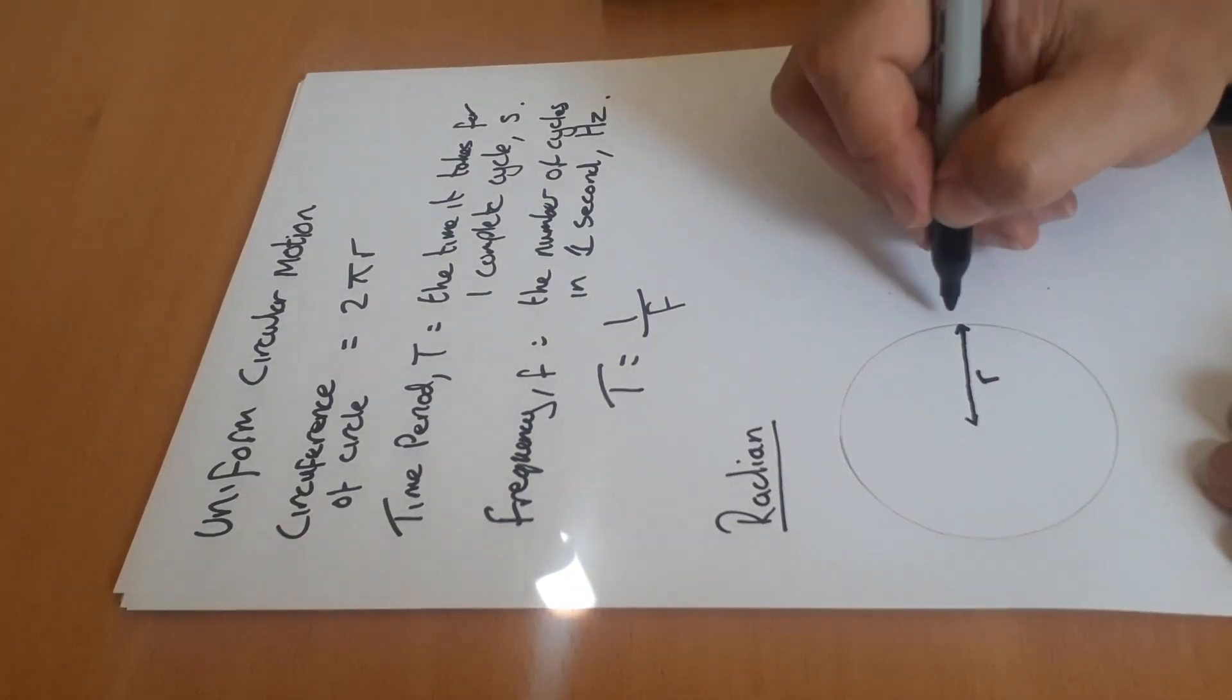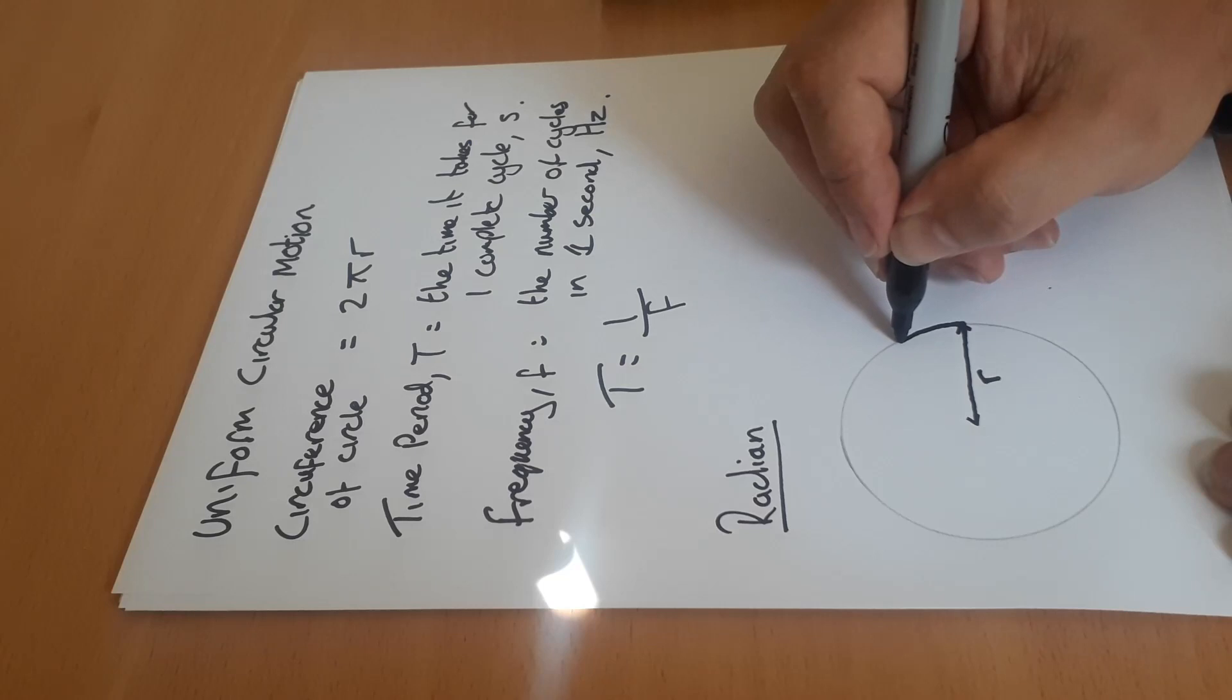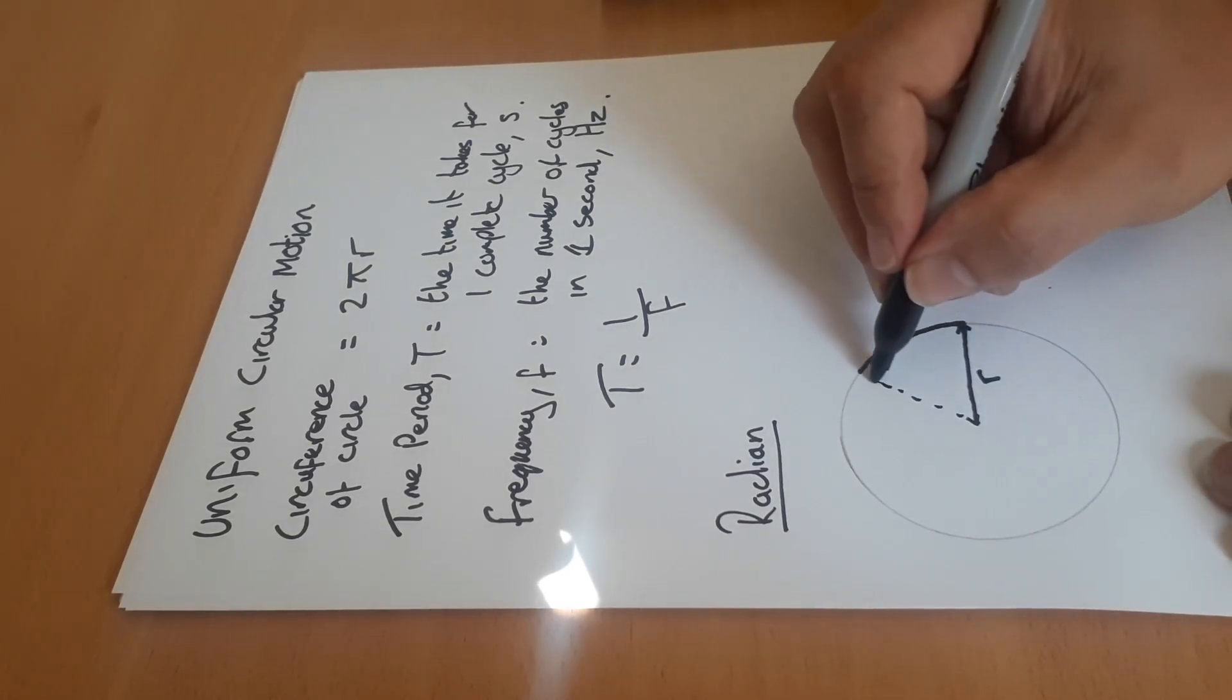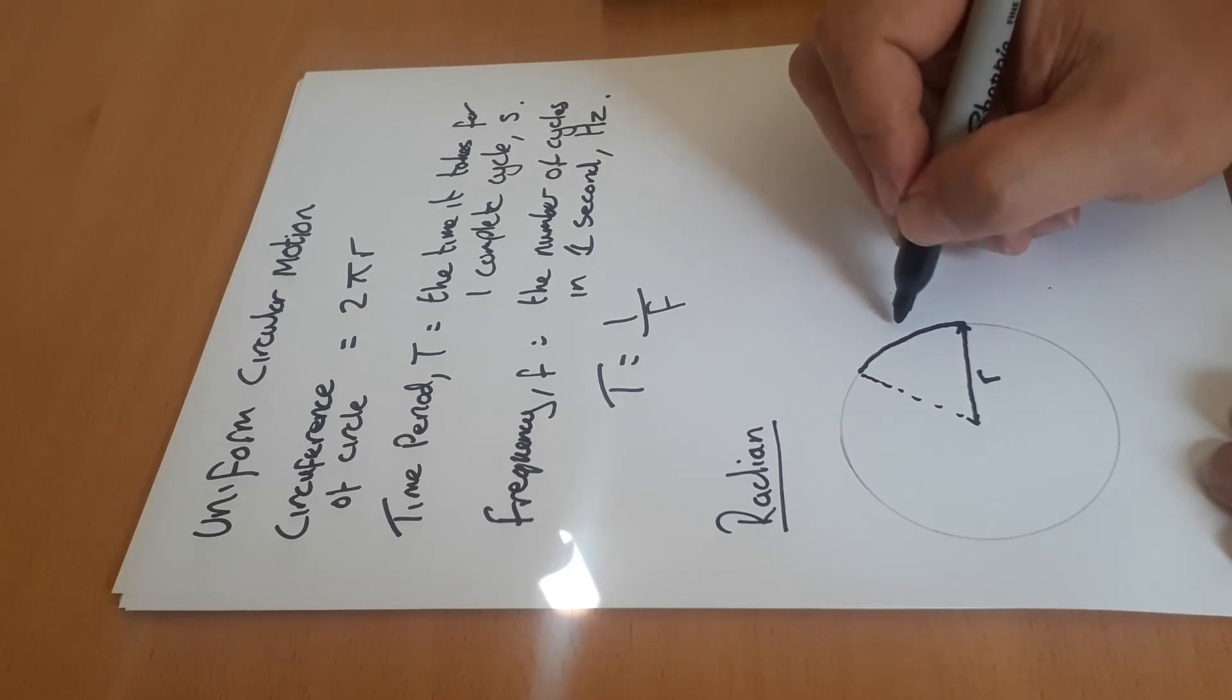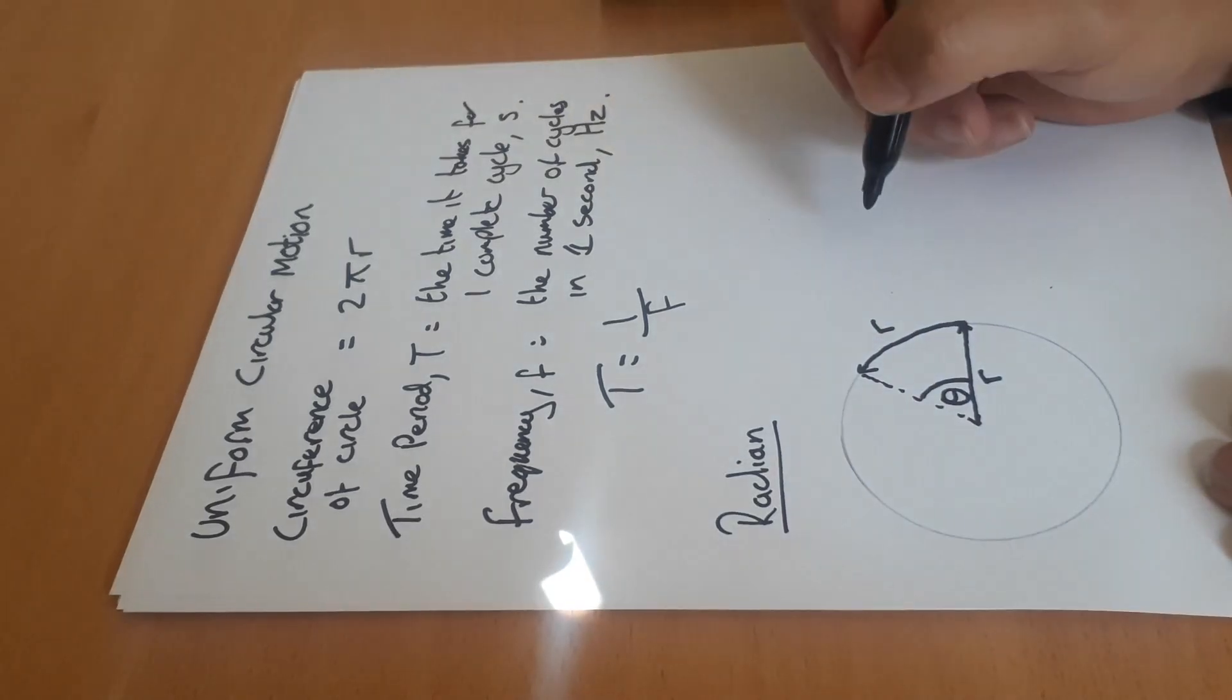Now the radian comes about from if you moved along an arc around that circle the same distance, equivalent to your radius, you would move through an angle of one radian.